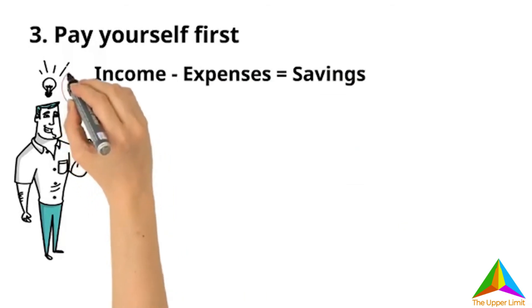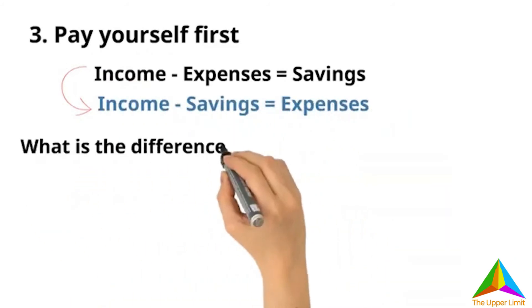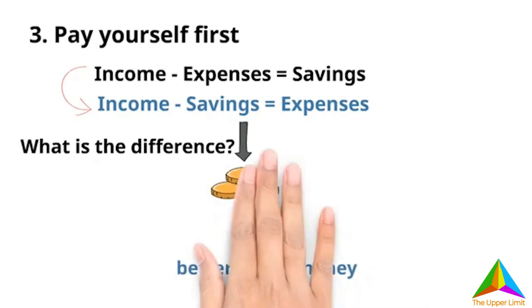However, if you modify it in this way, there's a bit of difference. Income minus savings equals expenses. What is the difference? Deducting your savings first means allotting less money for expenses, less money for unnecessary spending, and less spending means better use of money.